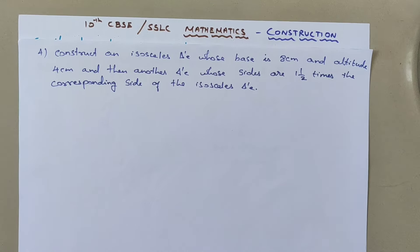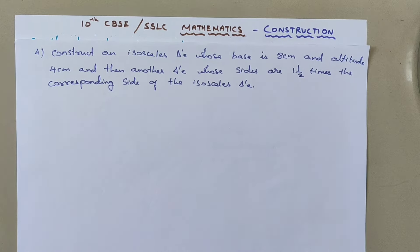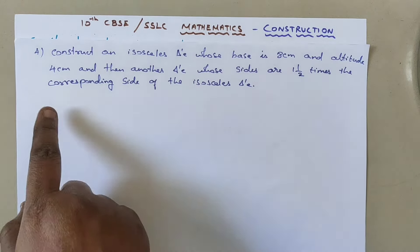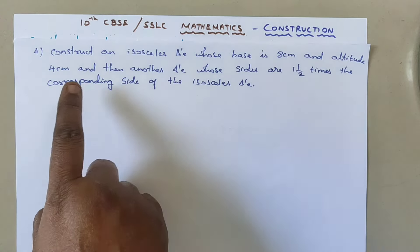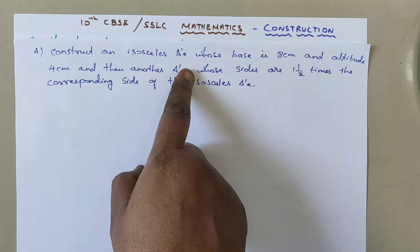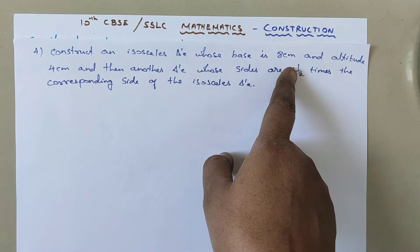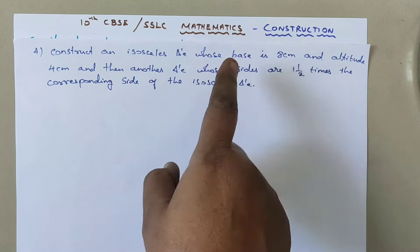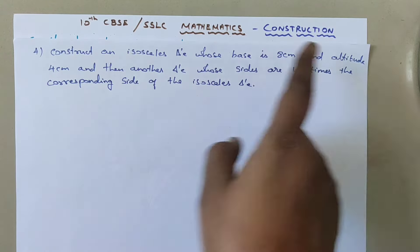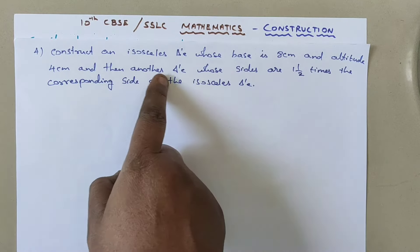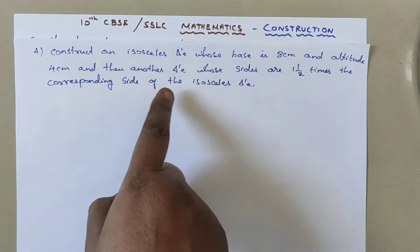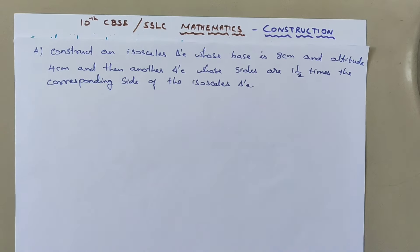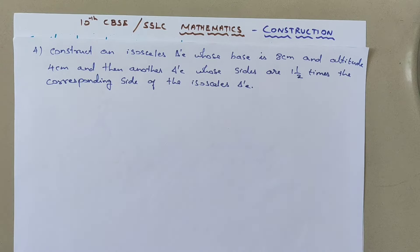Hello children, welcome back to my class. Today I am going to explain the fourth question of this construction chapter. Let me read the question: Construct an isosceles triangle whose base is 8 cm and altitude is 4 cm, and another triangle whose sides are 1½ times the corresponding sides of the isosceles triangle.